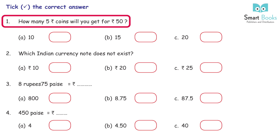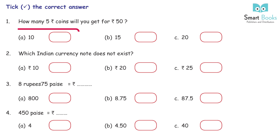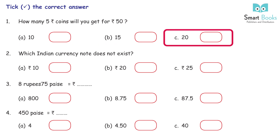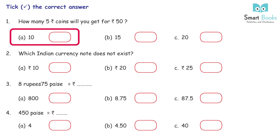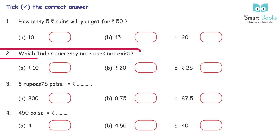Mental maths — pick the correct answer! 1. How many Rs. 5 coins will you get for Rs. 50? A. 10, B. 15, C. 20. Answer: A. 10.